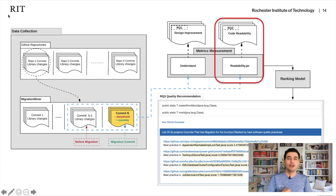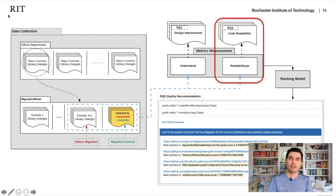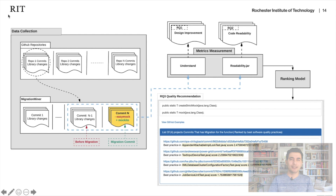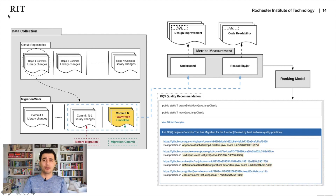Similarly, we studied code readability by running code readability tools on the code before and after migration and collecting the information. Beside that, we designed a ranking model to rank method mapping examples based on quality. A single method mapping could have multiple examples collected from different projects in the code, so the question is: what is the best example a developer should follow?